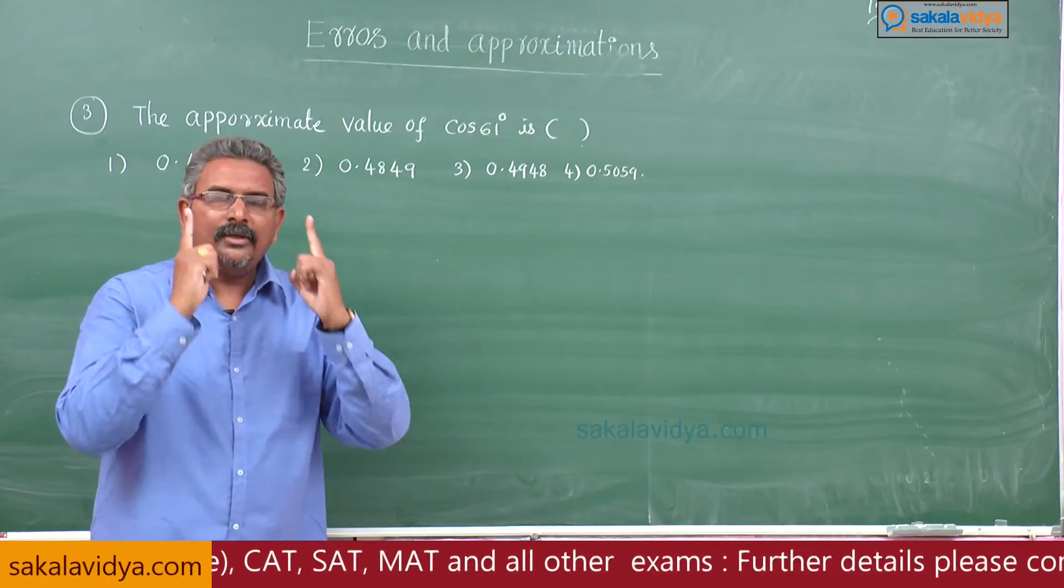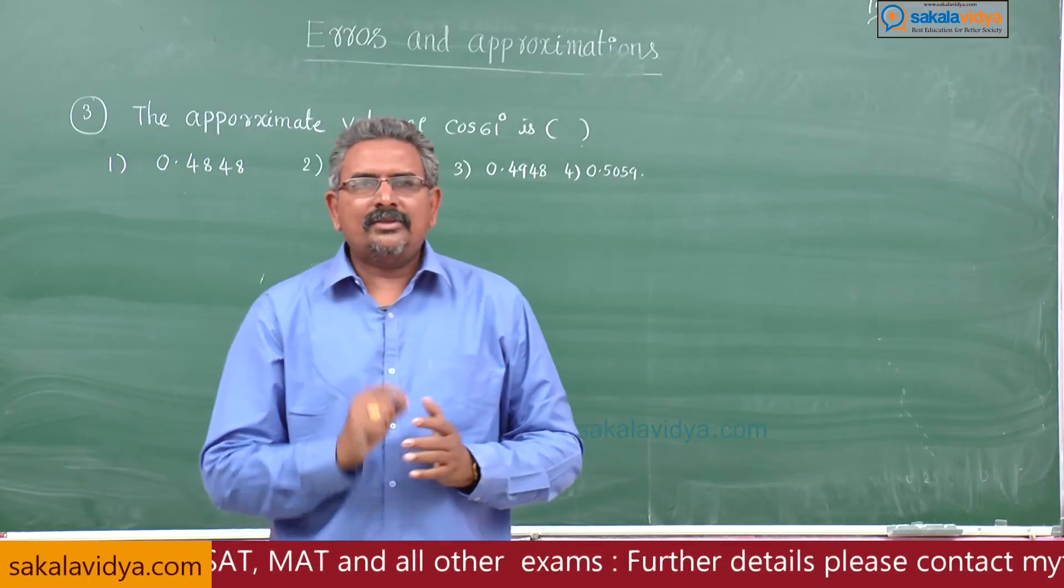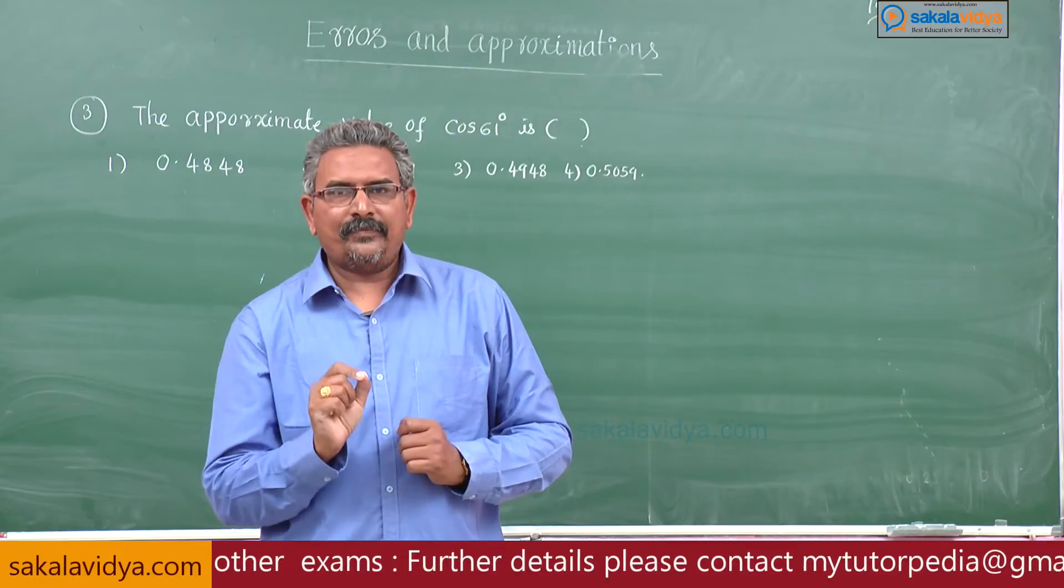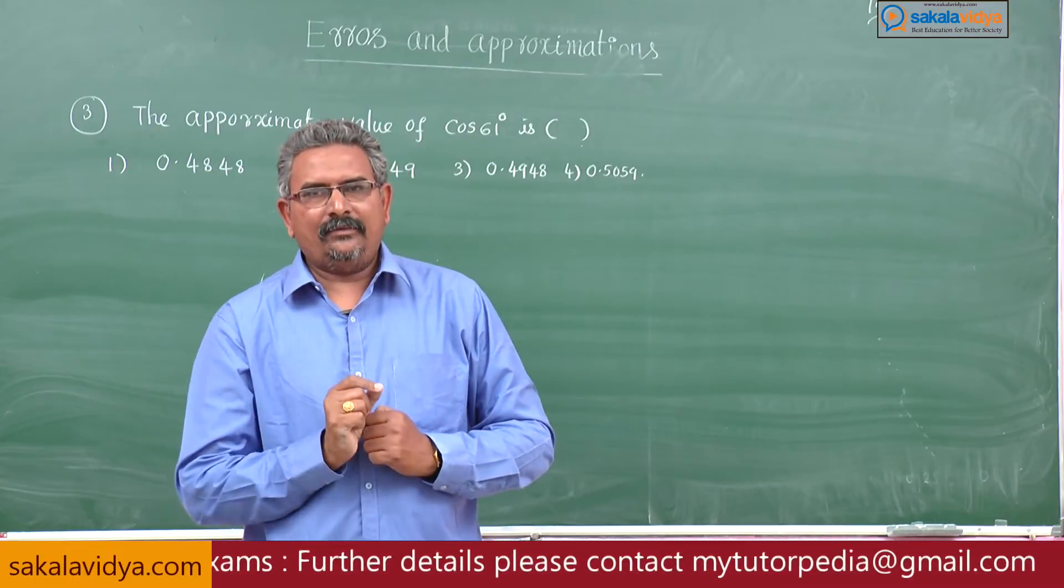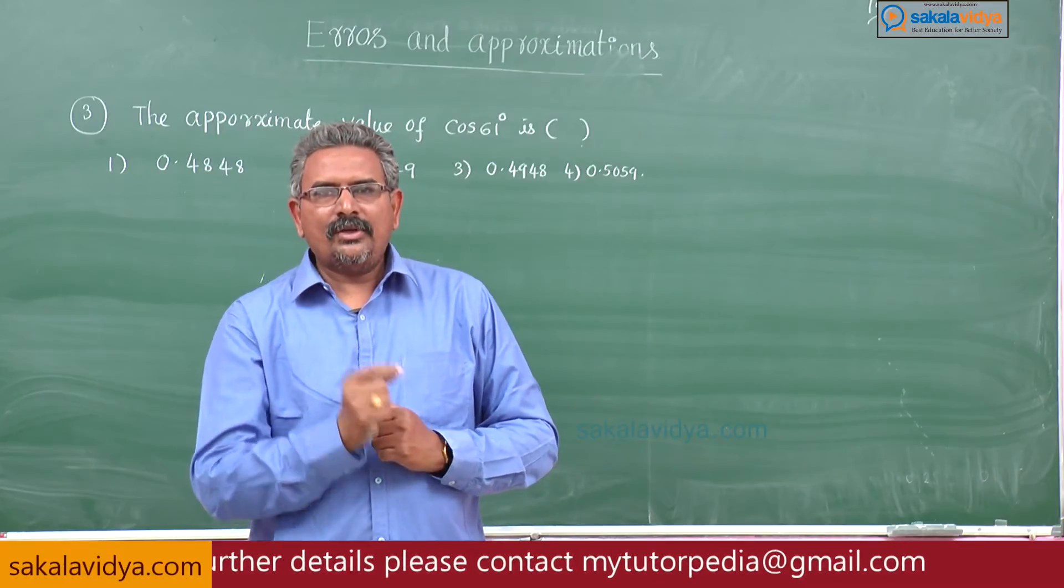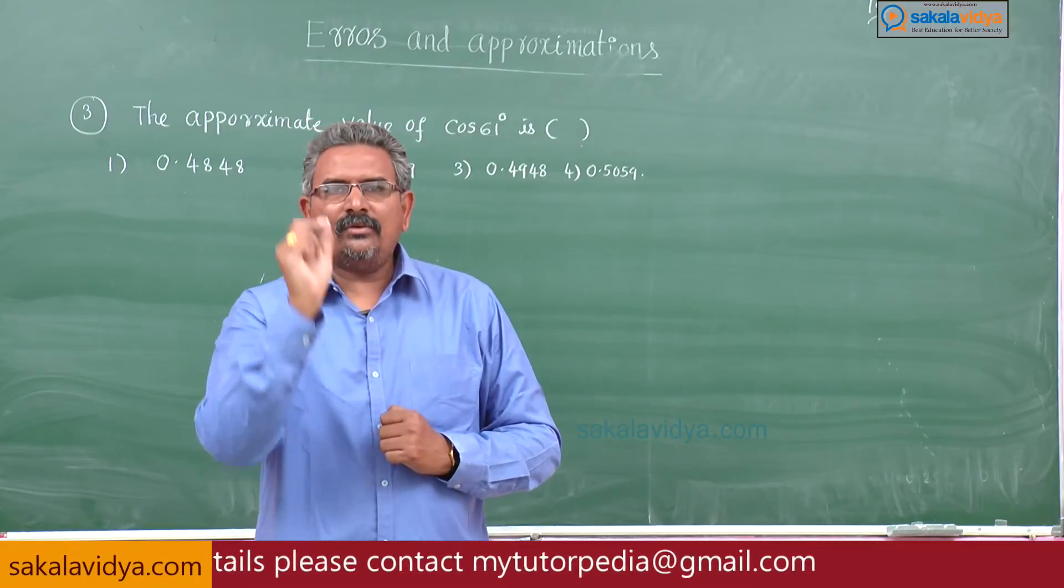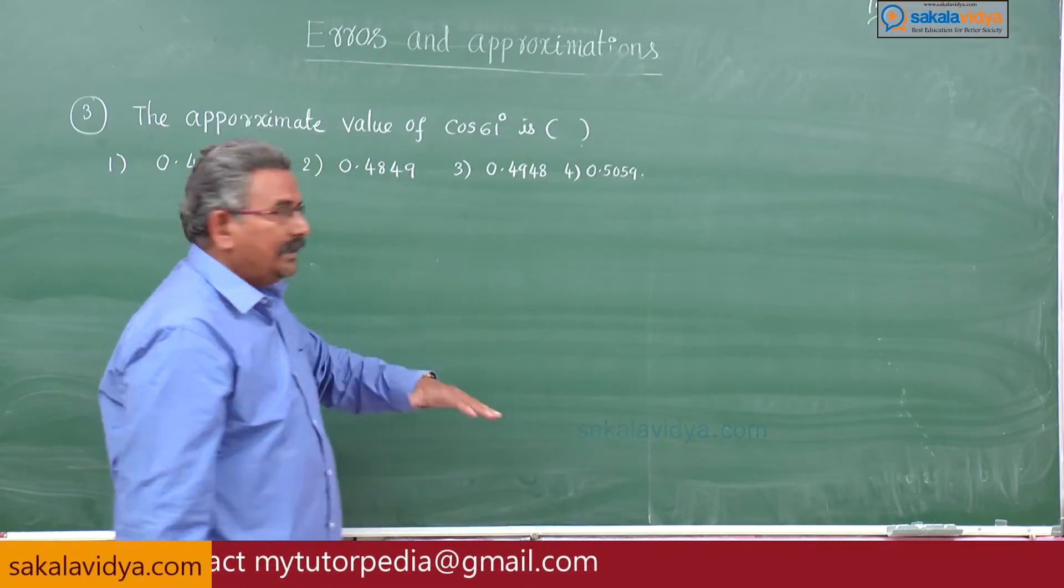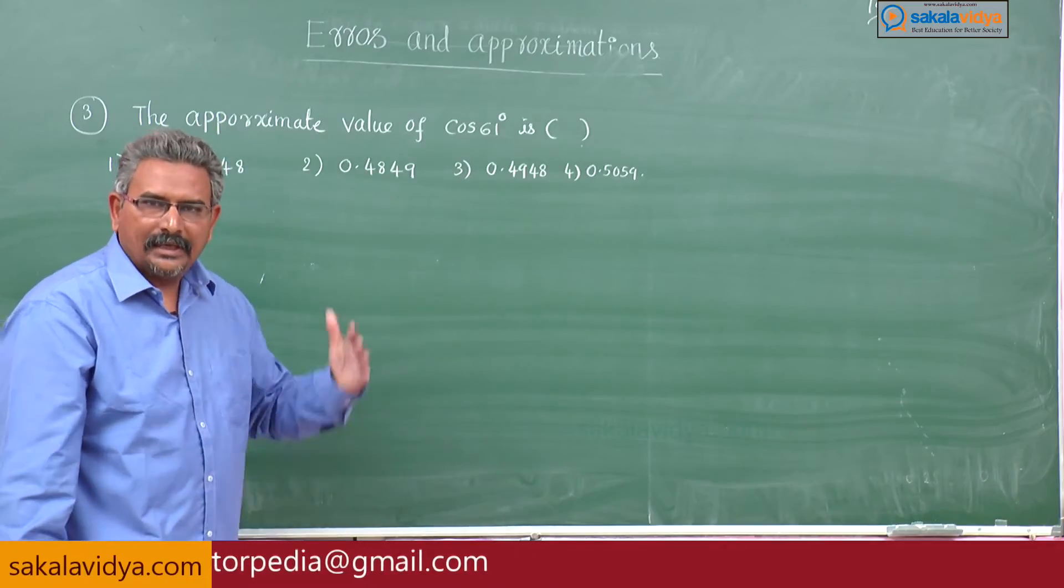1 degree, better you remember in your mind, 0.01745. Let me repeat once again, 1 degree equals to 0.01745 radians. Can we solve it now? Let us solve.